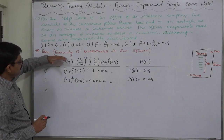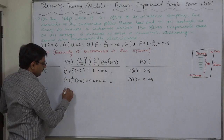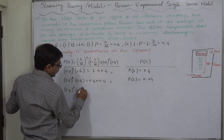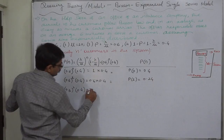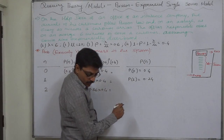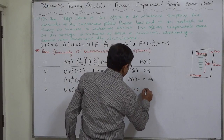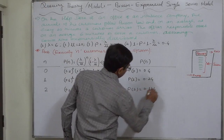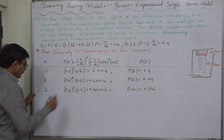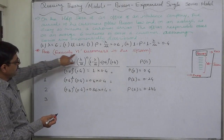Suppose n takes the value 2. The probability of exactly two customers in the system is the utilization rate raised to 2, multiplied by the idle rate. That is 0.36 into 0.4, which gives 0.144. So the probability of exactly two customers in the system is 0.144.